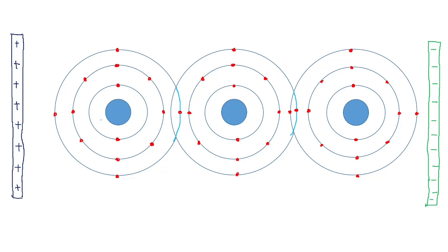Here we can see the first atom of silicon, the second atom of silicon, and the third atom of silicon. We also have the positive plate of the electric field on one side and the negative plate of the electric field on the other side.